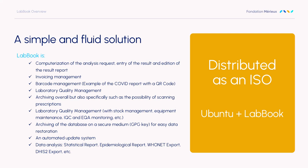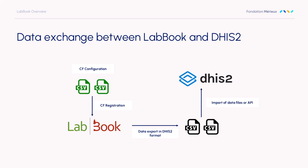With Labbook 3, we now have compatibility with DHIS2. You install a CSV file into Labbook that explains how to calculate and export data according to the DHIS2 format of the targeted country. As DHIS2 from one Ministry of Health can be completely different from another, this first step helps customize the exportation. Labbook then calculates according to this CSV file and gives you all the data to import into DHIS2.